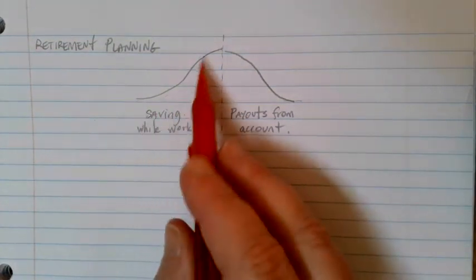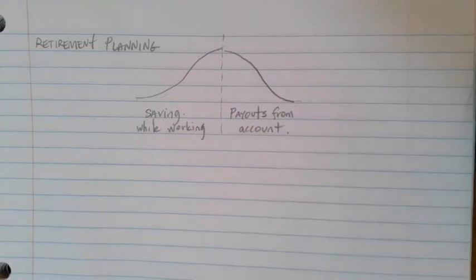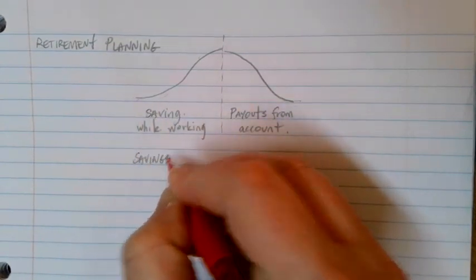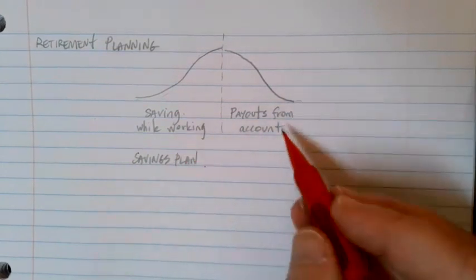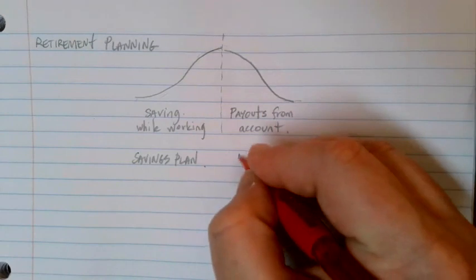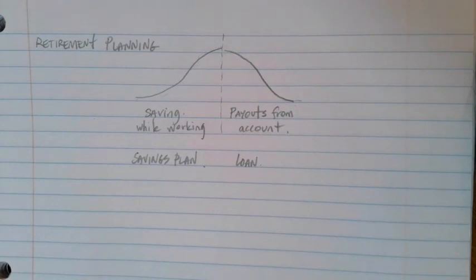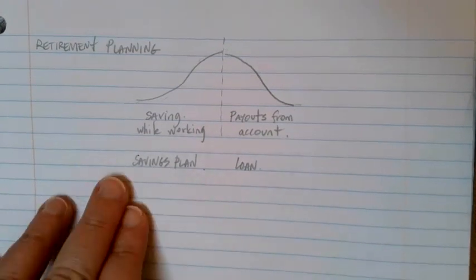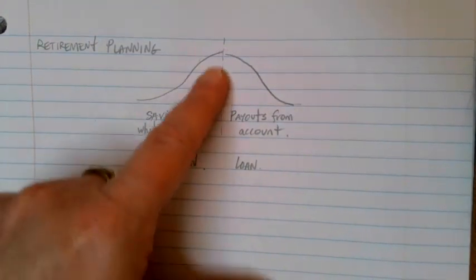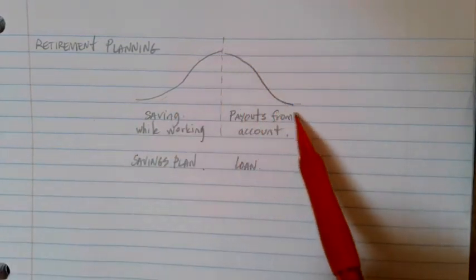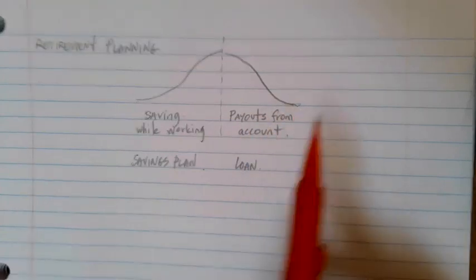Because one of these is saving up and the other is spending, we use two different formulas as part of our retirement planning process. For the saving up while working, we're going to be using the savings plan formula. And then for figuring out the payouts from our account, we're going to be using the loan formula. Basically, we're taking a loan from our own account and paying ourselves is essentially the way that you kind of think of that. The savings plan while you're working to get that total amount of money that you'll need at the end of retirement. And then we're going to be using our loan formula for getting our payments out over time and funding the lifestyle that we want after retirement.